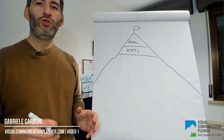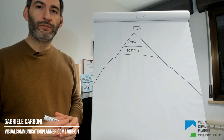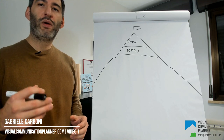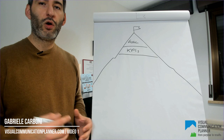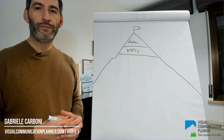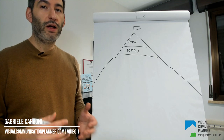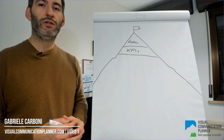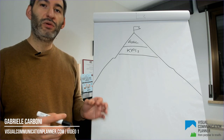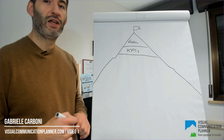What should you do before setting KPIs? How does your path look going backwards? If you want to have something to measure, you need to take action. This step is called channels and activities.